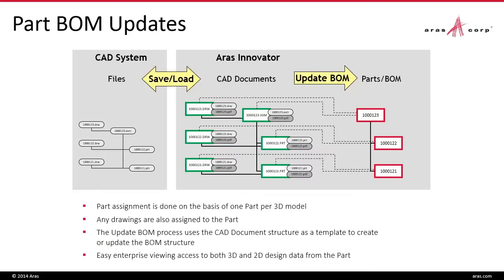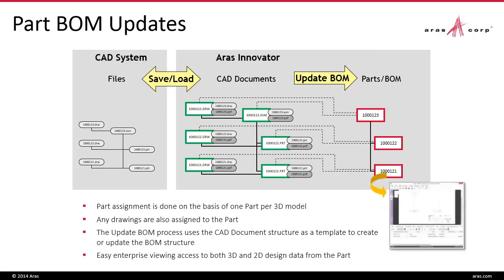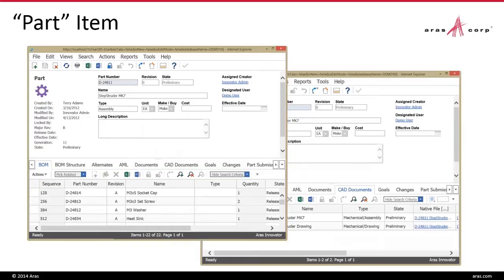The second phase of CAD integrations is to update the part BOM. Part assignment is done on the basis of one part per 3D model in the case of MCAD, and for ECAD on the basis of the overall PCB assembly and components such as the board itself. Any drawings are also assigned to the part, and the update BOM process uses the CAD document structure as a template to create or update the BOM structure. Part items created in ARIS from the CAD connector have a BOM tab showing the automatically extracted bill of materials, and the CAD document tab showing the related CAD documents and associated files.